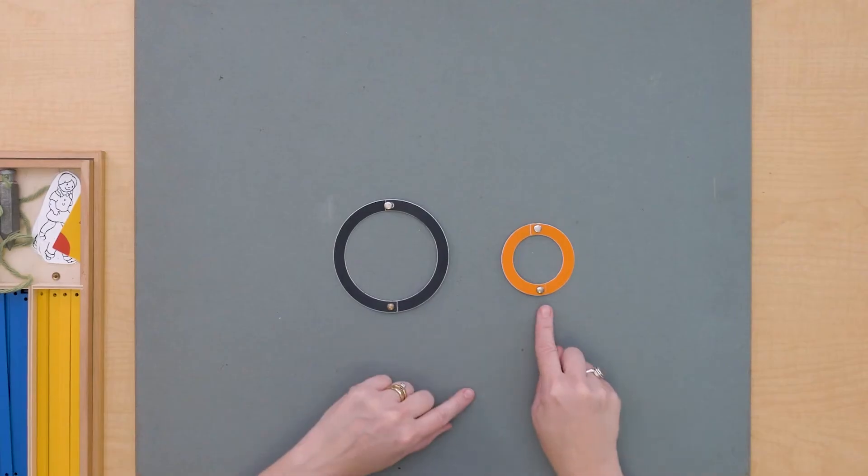Circles can also have some relationships. Right now, this circle is external to this circle.